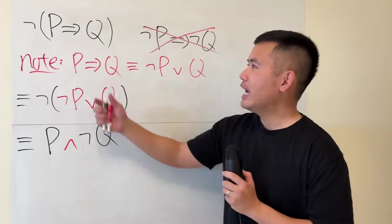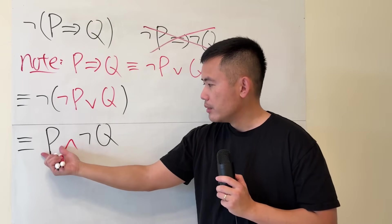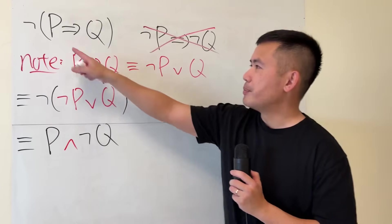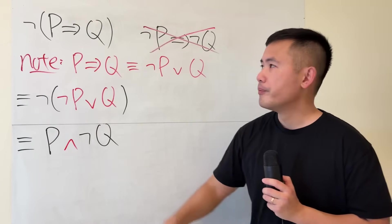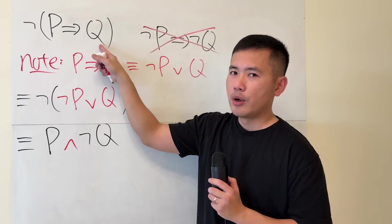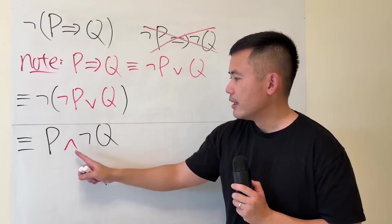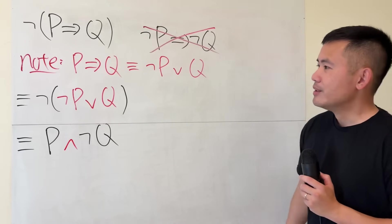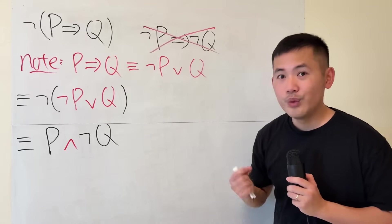So when we have the negation of an implication, the condition is true but the conclusion is false. For example, if P is 'it's Sunday' and Q is 'I will go play basketball,' then P implying Q means 'if it's Sunday, then I will go play basketball.' Its negation is: 'it's Sunday, however I am not playing basketball.' I'll now show you using a truth table that these are logically equivalent.